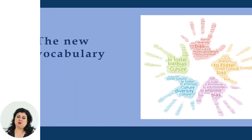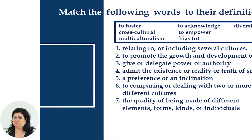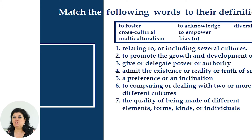Look at this picture – we have a lot of words: bias, multiculturalism, to foster, cross-cultural, culture in general, diversity, to empower, and many others. We will talk about these words and try to match them with their definitions. In the table you see: to foster, cross-cultural, multiculturalism, to acknowledge, to empower, bias as a noun, and diversity.